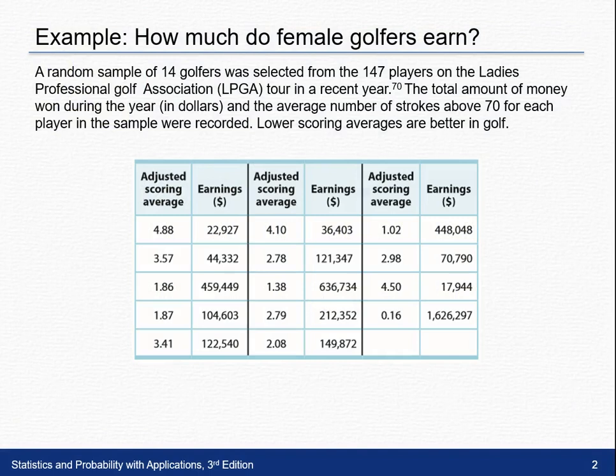The problem says a random sample of 14 golfers was selected from 147 players on the Ladies Professional Golf Association. The total amount of money won during each year in dollars and the average number of strokes above 70 for each player in the sample was recorded. Lower scoring averages are better in golf. We have a list of each of the 14 golfers with their adjusted score and their earnings.